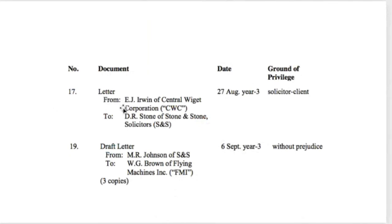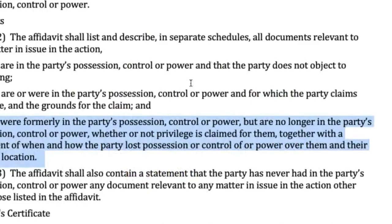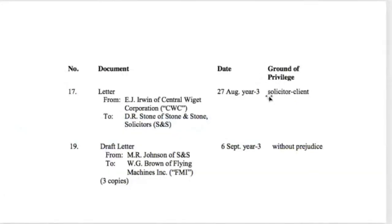Here is a page from a real schedule to a real affidavit of documents. The answer is Schedule B, because we have grounds of privilege being claimed. These would be documents where the party says they should not have to produce them. You have to list the ground of privilege because grounds of privilege can be contested — that's what next week's cases are largely about. The party must have the opportunity to say that's not a legitimate claim of privilege and bring a motion to fight it out.